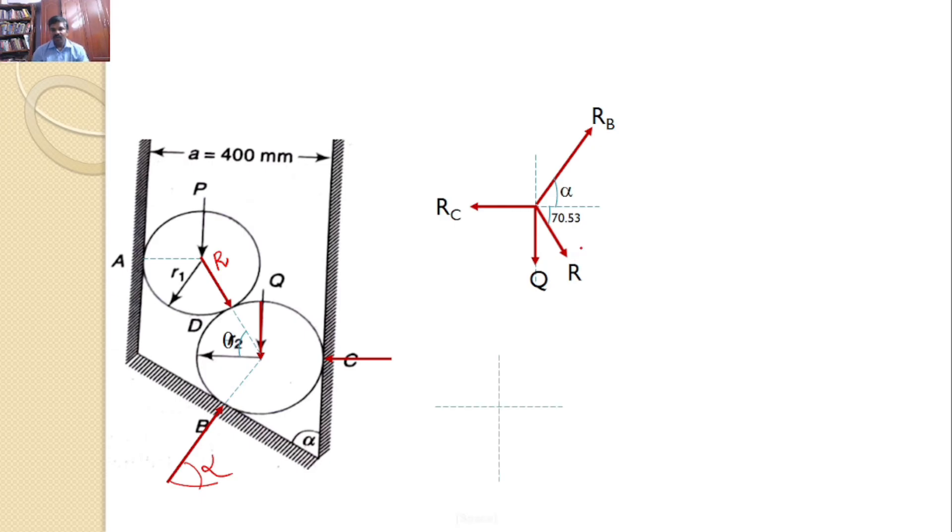So, let us resolve all the forces. The force is Q. You need not to resolve. This is RC. Next, R. The vertical component is R sin 70.53. Horizontal component cos 70.53. Similarly, RB. Horizontal component is RB cos alpha. Vertical component is RB sin alpha.